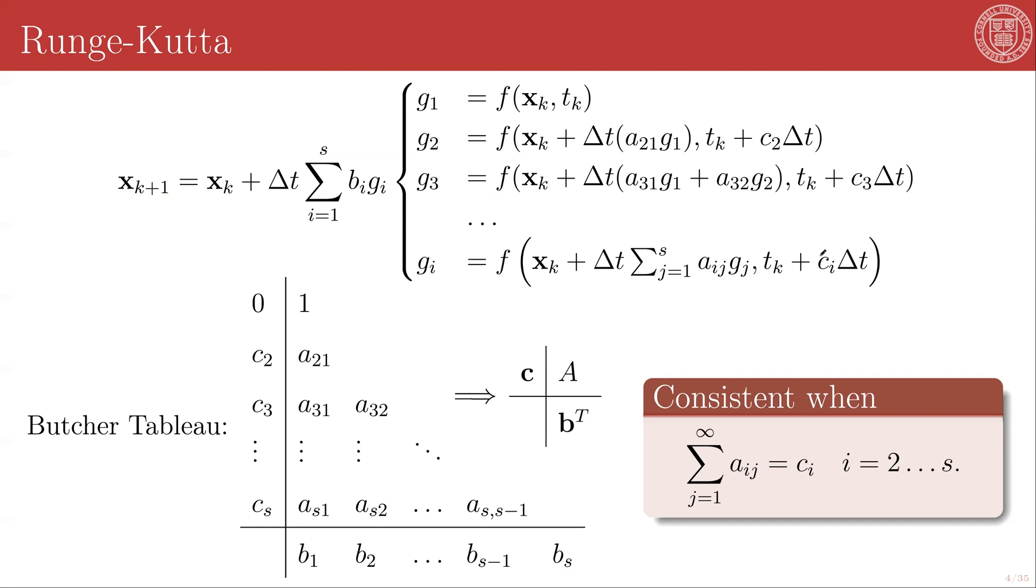So in order to define a Runge-Kutta scheme, you need to define a vector of these c values, a vector of these b values, and a matrix of these A values. And typically we do so in something called a Butcher tableau, which puts the c's in this first column, puts all the A's next to it, and then puts the transpose of the b's in the final row.